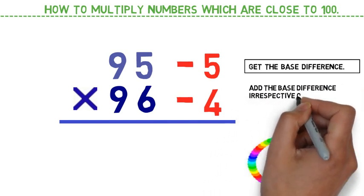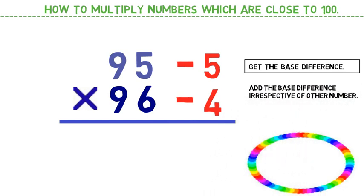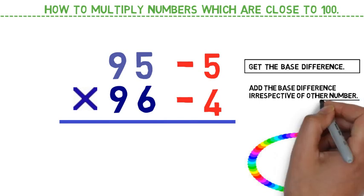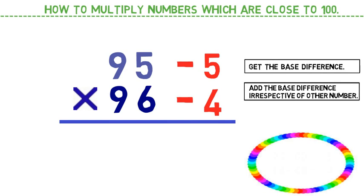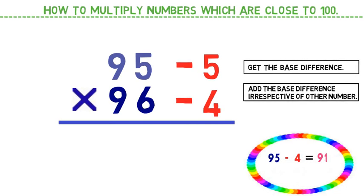In step 2, add the base difference irrespective of other number. That means, if I consider 95 as the first number, then we need to add the base difference of other number, which is minus 4. So if I add minus 4 into 95, I get 95 minus 4 equals 91. These are the initial digits of our answer.